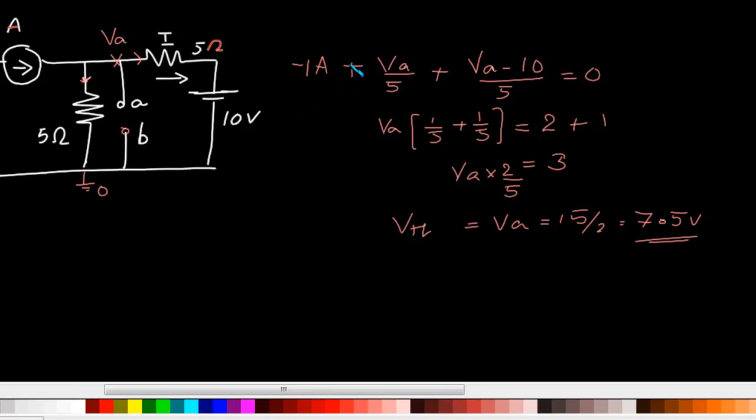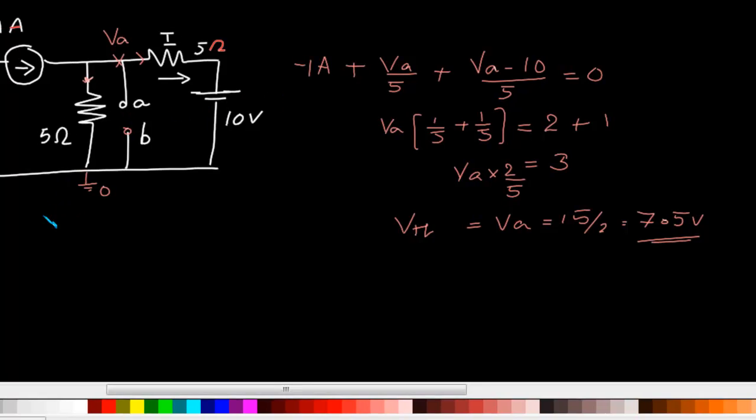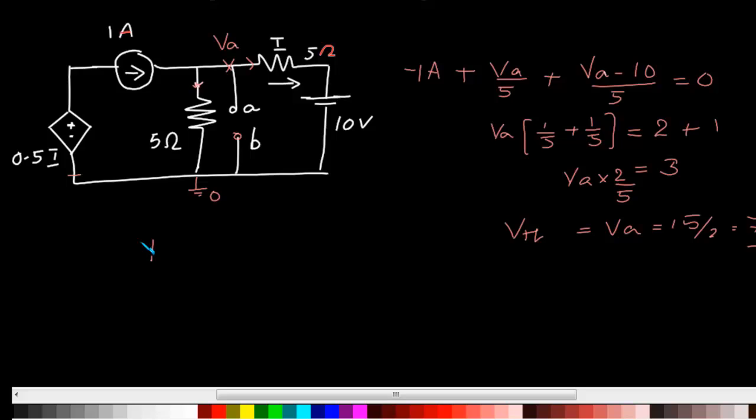Now since we have already found out what is the Thevenin's voltage, a better approach to find out the Thevenin's resistance is to find the Norton current or I Norton across these terminals A and B. To find I Norton or I short circuit, what we have to do is short circuit A and B and find out what is the current flowing through this short circuit.